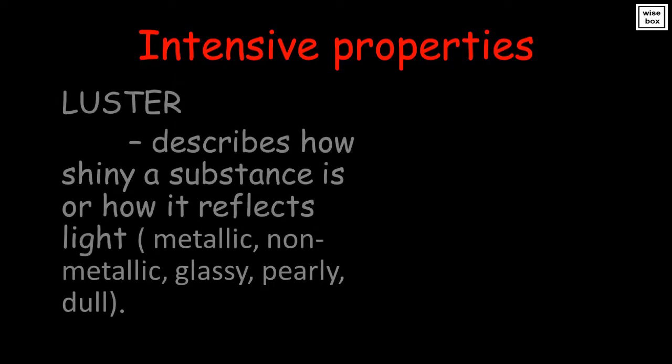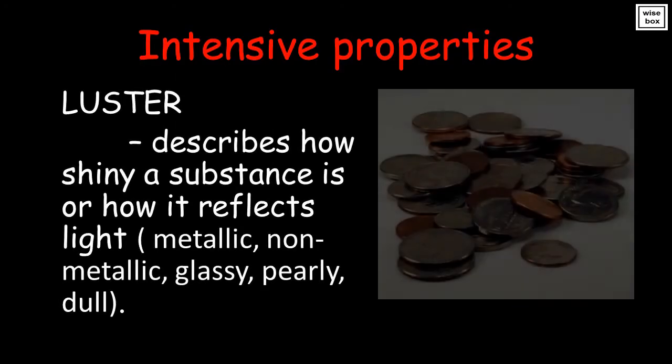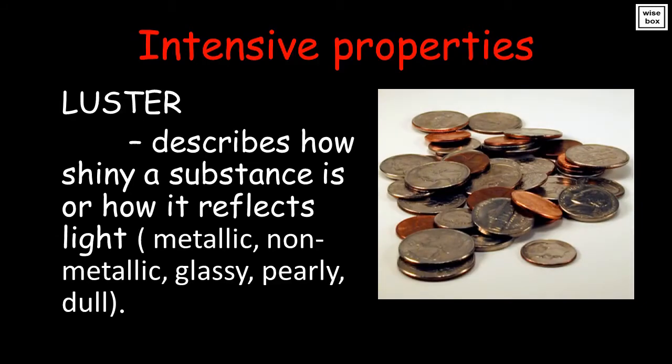Luster describes how shiny a substance is or how it reflects light. It can be metallic, non-metallic, glassy, pearly, or dull.